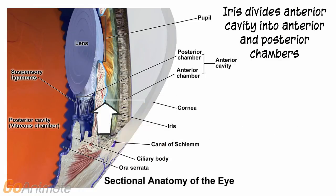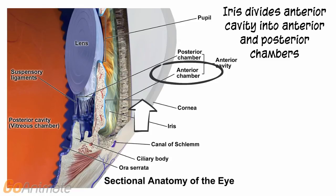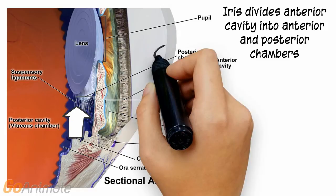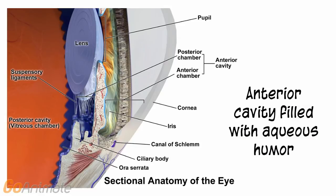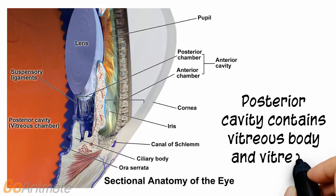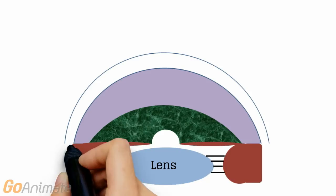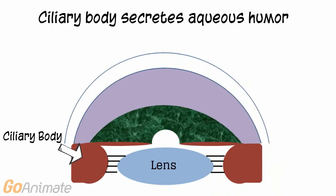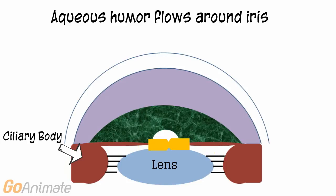The iris divides the anterior cavity into anterior and posterior chambers. The anterior cavity is filled with a fluid called aqueous humor. The posterior cavity contains the vitreous body and vitreous humor. Aqueous humor is secreted by the ciliary body, which also holds the lens in place by suspensory ligaments.